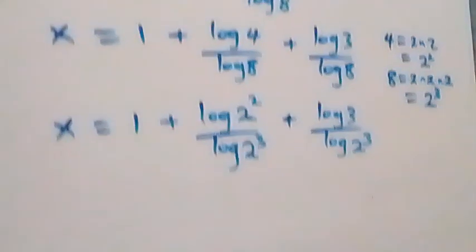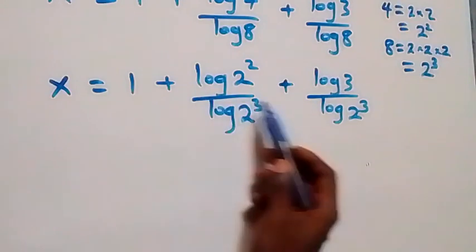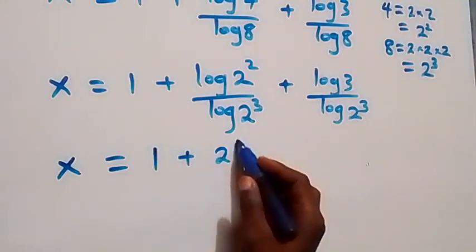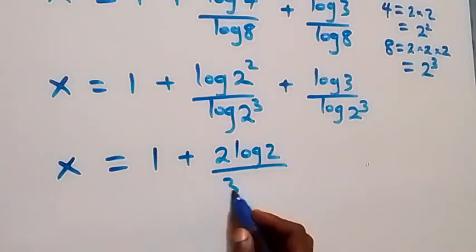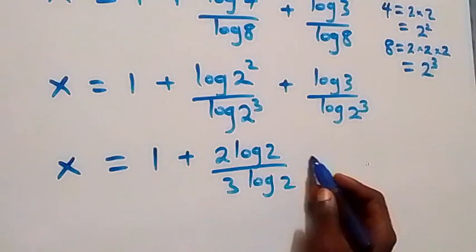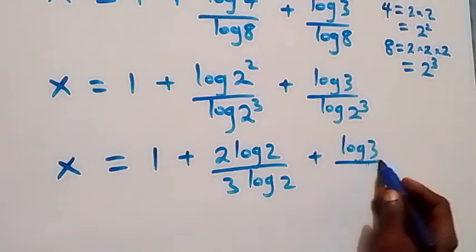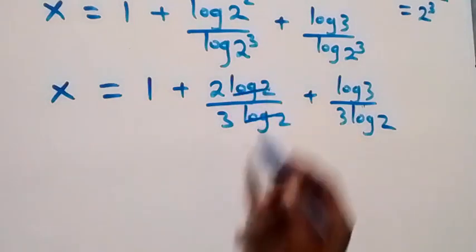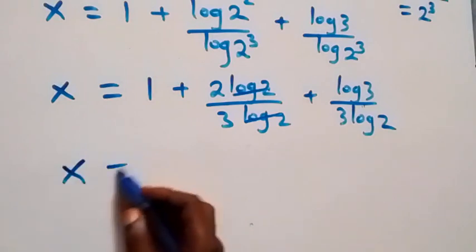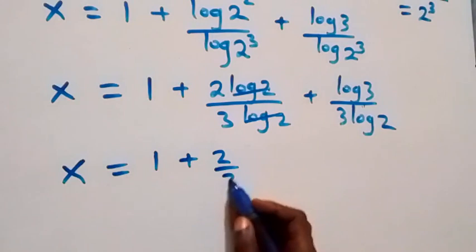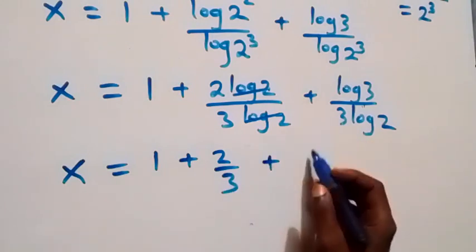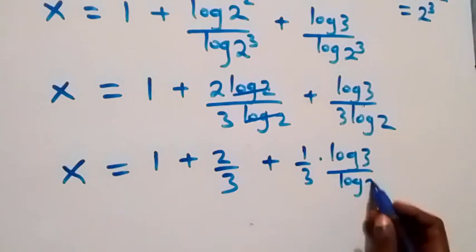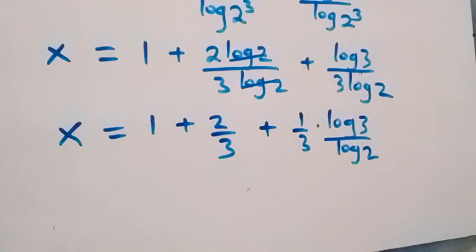We can write 4 as 2² and 8 as 2³. Applying the power rule of logarithms, log(4) = 2·log(2) and log(8) = 3·log(2). So x = 1 + (2·log(2))/(3·log(2)) + log(3)/(3·log(2)). The log(2) terms cancel, giving x = 1 + 2/3 + (1/3)·(log(3)/log(2)).